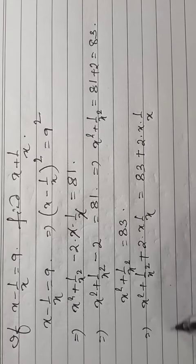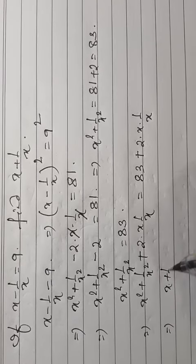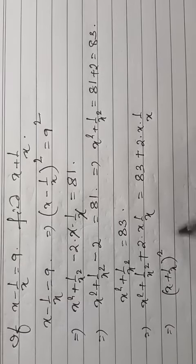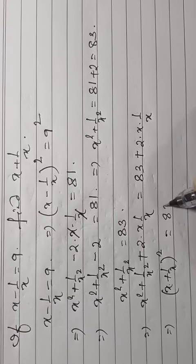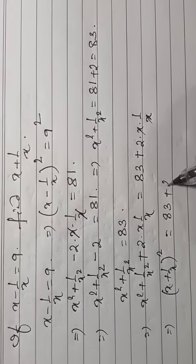Framing an identity, that should be x plus 1 by x whole square is equal to 83 plus 2.